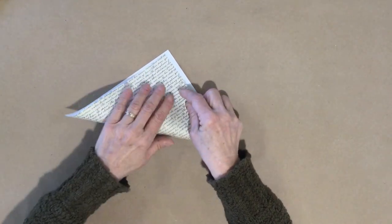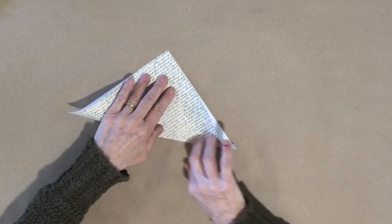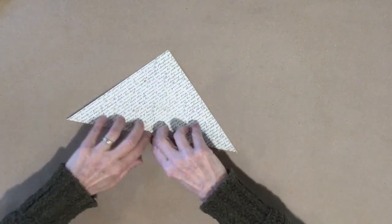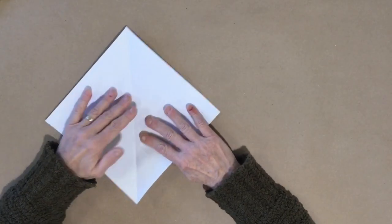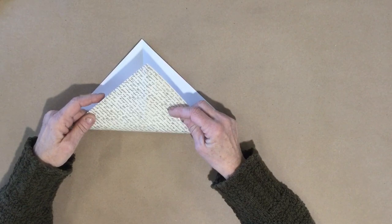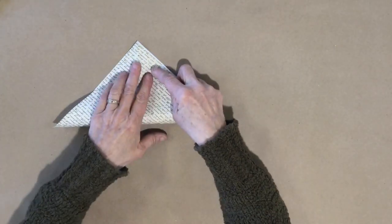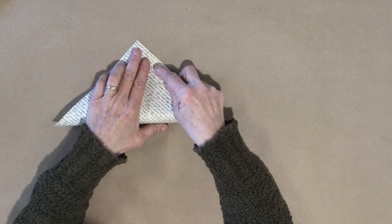So I'm going to fold it point to point, so you will have a triangle here. And you want the image side on the outside. And then I am going to fold it point to point the opposite way.